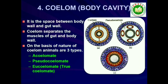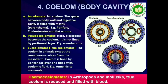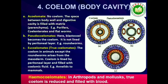4. Coelom: Presence or absence of a cavity between the body wall and the gut wall is very important in classification. The body cavity which is lined by mesoderm is called coelom. Animals possessing coelom are called coelomates, for example, annelids, molluscs, arthropods, echinoderms, hemichordates and chordates. In some animals, the body cavity is not lined by mesoderm; instead, the mesoderm is present as scattered pouches in between the ectoderm and endoderm. Such a body cavity is called pseudocoelom and the animals possessing them are called pseudocoelomates, for example, aschelminthes. The animals in which the body cavity is absent are called acoelomates, for example, platyhelminthes.